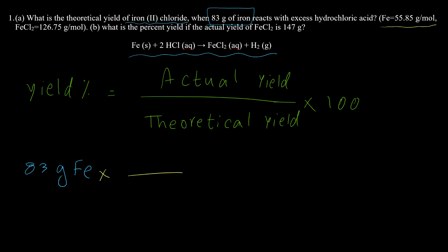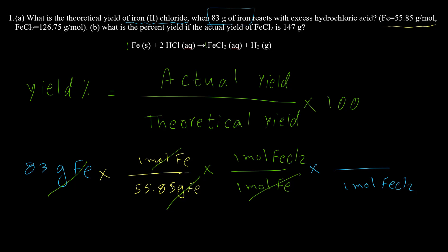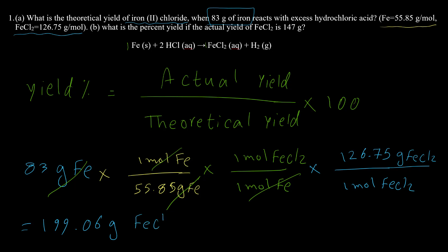The molar mass of iron is 55.85, so 1 mole of iron is 55.85 grams. Based on the equation, 1 mole of iron equals 1 mole of iron chloride. Finally, we convert 1 mole of iron chloride to grams using its molar mass of 126.75, giving an answer of 199.06 grams of iron chloride.